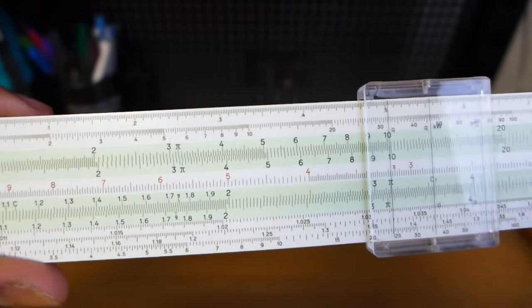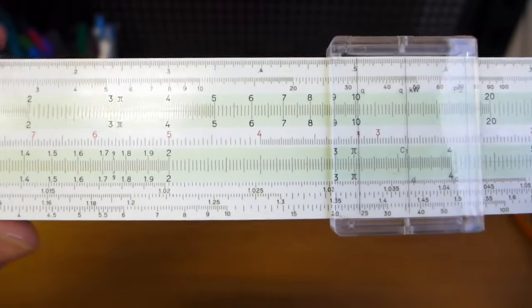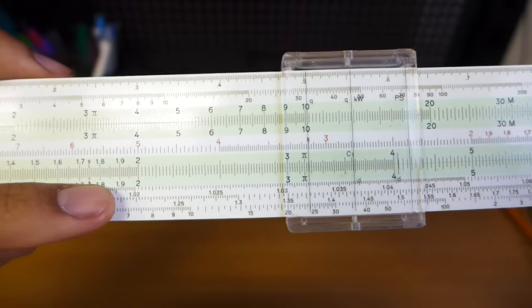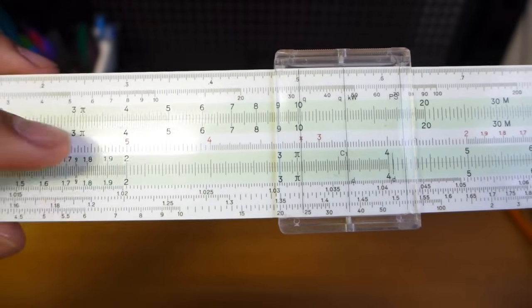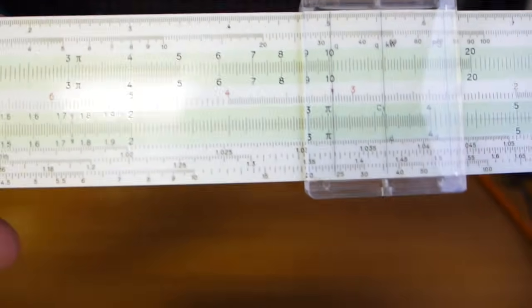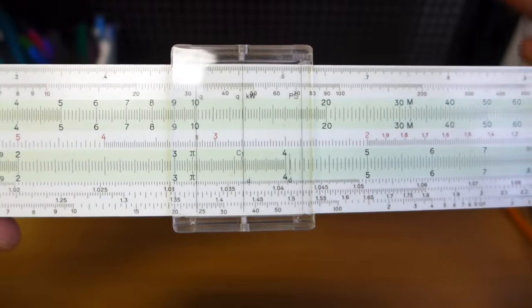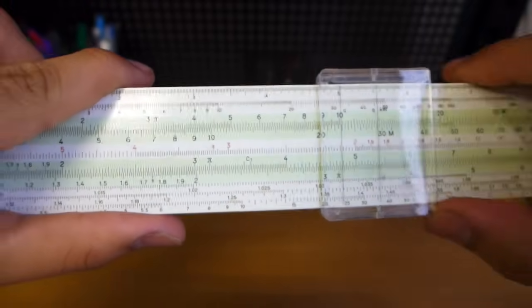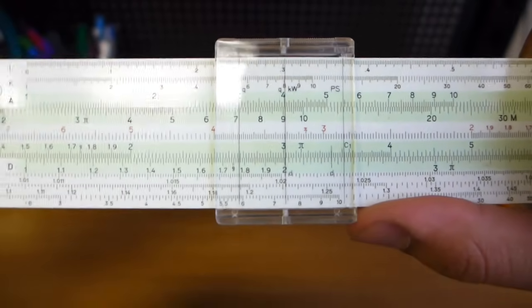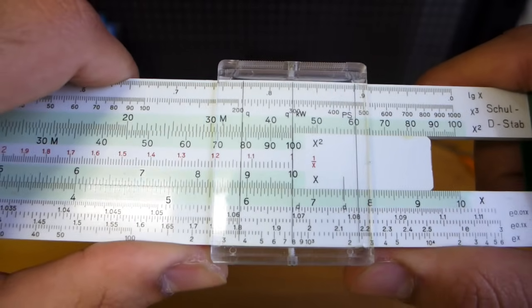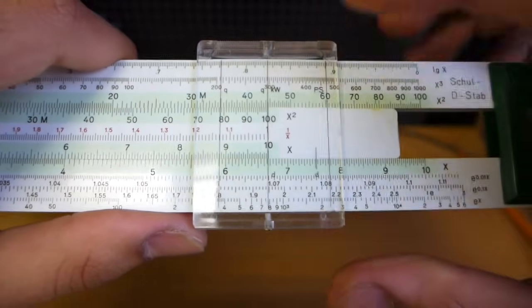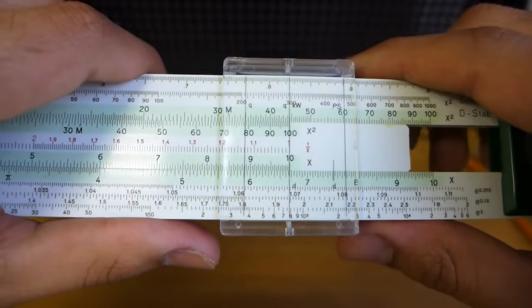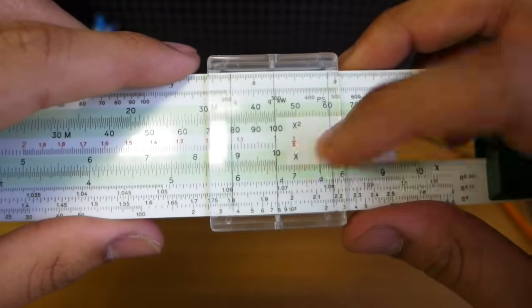Division on a slide rule is very similar, except that you kind of switch it around. For division, you put the top number of the fraction on the bottom and the bottom number of the fraction on the top. And you read the answer off one of the indices. So say for example, I want to divide 2 by 3. It would be 2 over 3. On a slide rule, I would put the 3 over the 2. Let's line it up. And read the answer 0.667 off the index that lies on the scale. The other index is off the scale, so obviously you can't read off of that one. And that's how you do division on a slide rule.